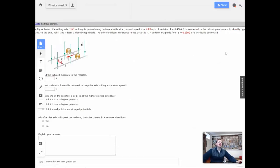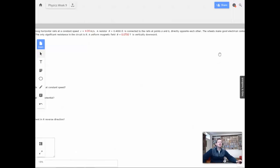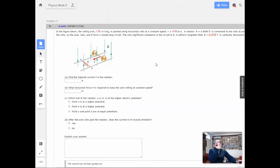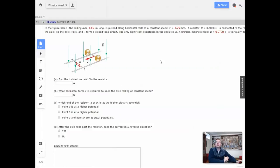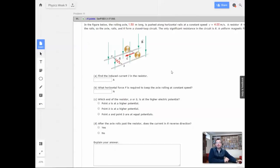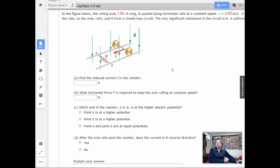The wheels make good electrical contact with the rails. The axle, rails, and R form a closed loop circuit. The only significant resistance in the circuit is R. A uniform magnetic field of 0.07 Teslas is vertically downward. Find the induced current in the resistor.